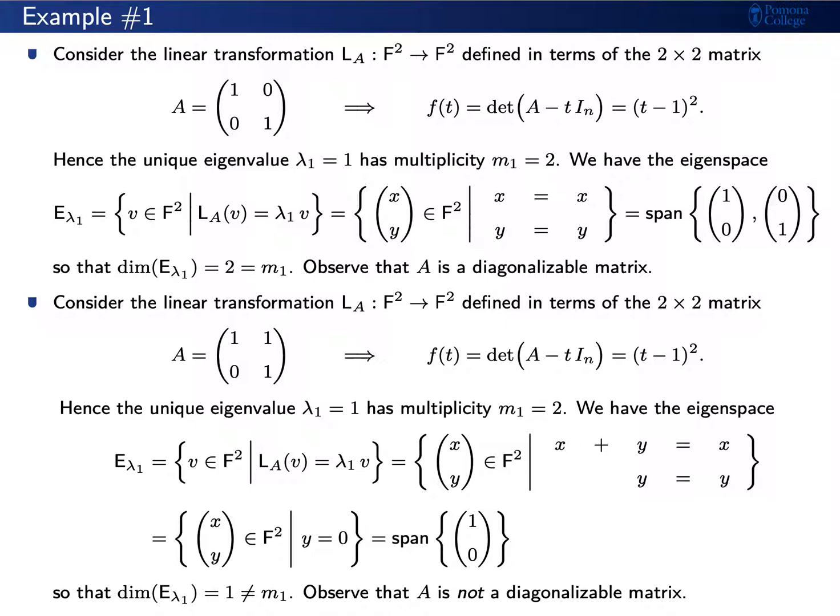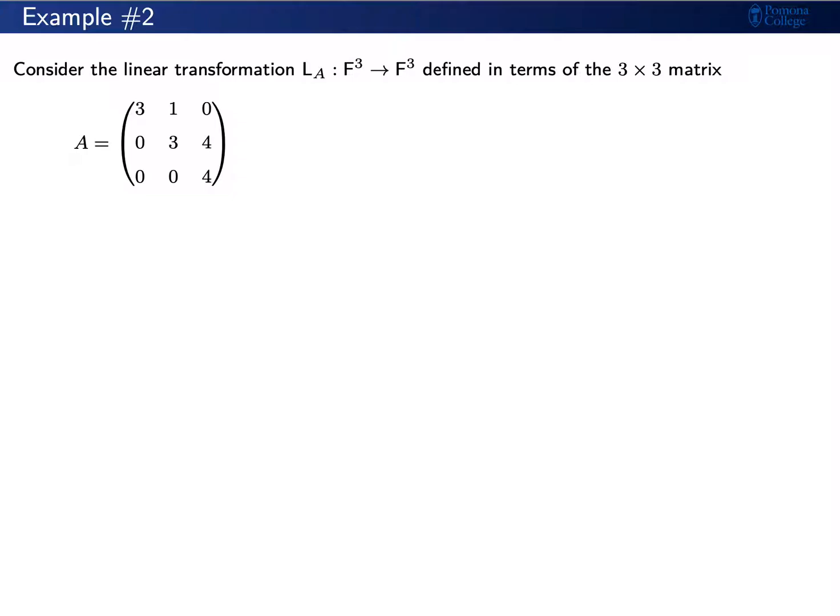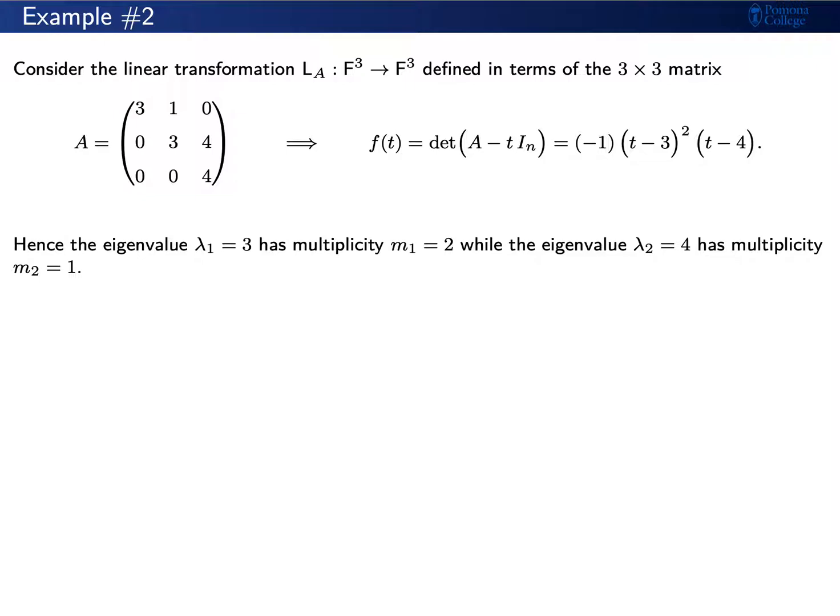Consider another example: the 3x3 matrix with entries 3, 1, 0, 0, 3, 4, 0, 0, 4. Since this is an upper triangular matrix, the characteristic polynomial is negative 1 times (T minus 3) squared times (T minus 4). The eigenvalues are lambda 1 equals 3 with multiplicity m1 equals 2, and lambda 2 equals 4 with multiplicity m sub 2 equals 1.